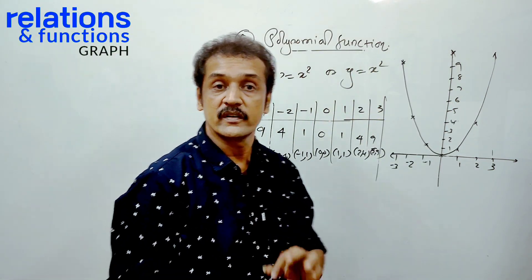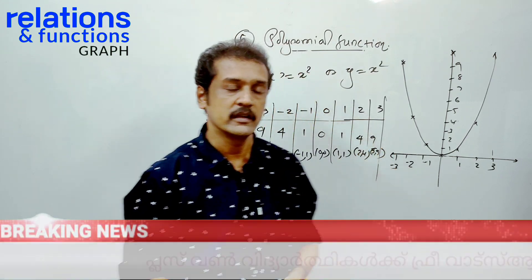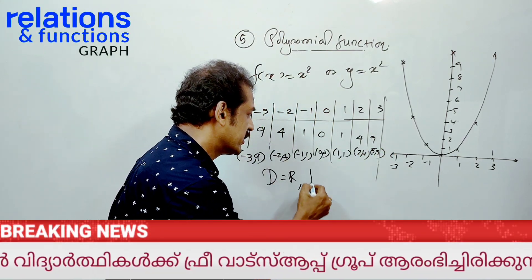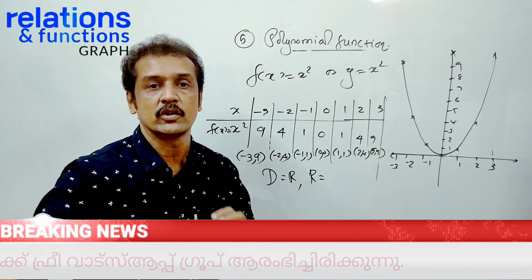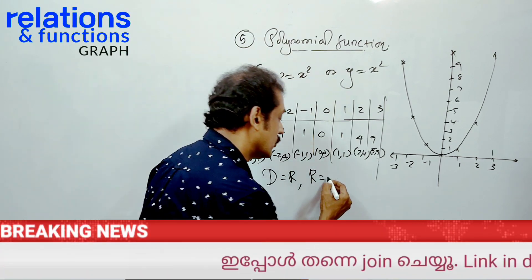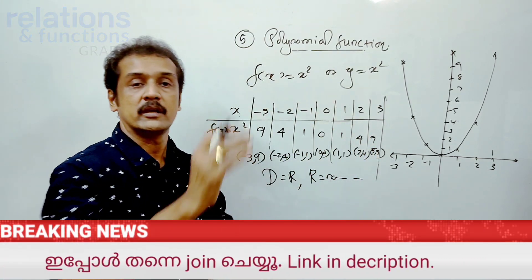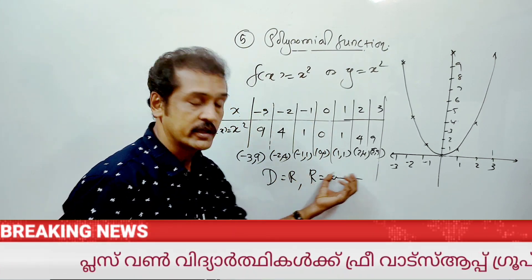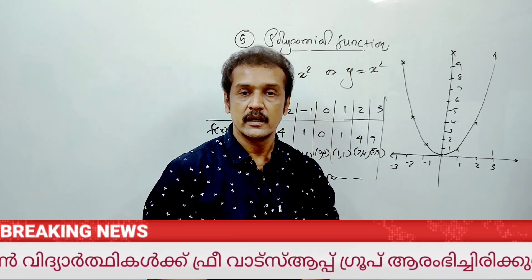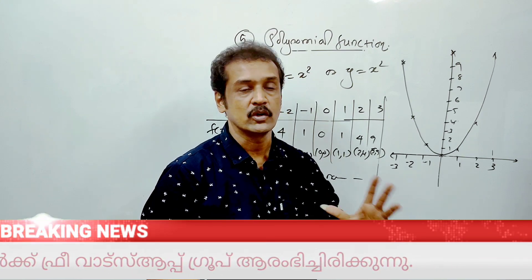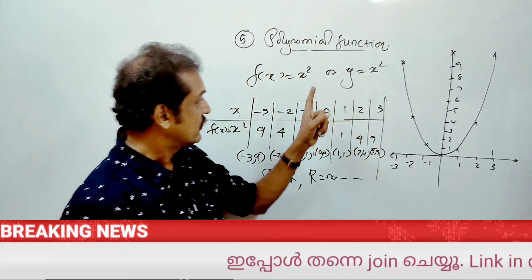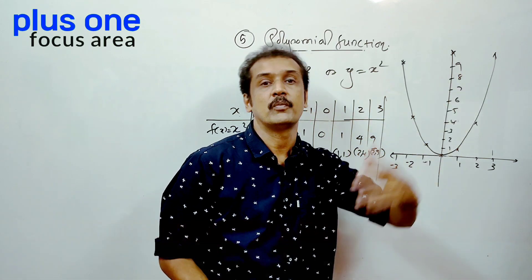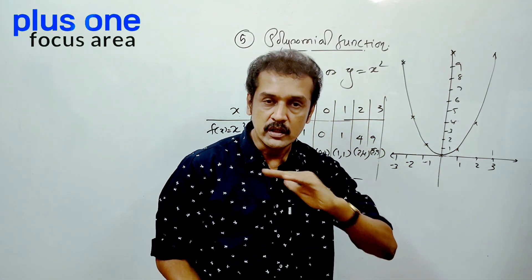This is the f of x equals x squared parabola graph. Domain is all real numbers capital R, and range is the set of all non-negative real numbers, because x squared is always positive or zero.